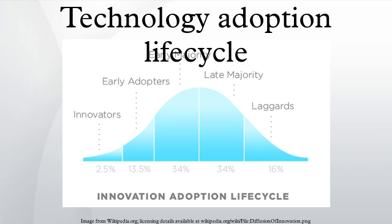The model has spawned a range of adaptations that extend the concept or apply it to specific domains of interest. In his book Crossing the Chasm, Geoffrey Moore proposes a variation of the original life cycle. He suggests that for discontinuous or disruptive innovations, there is a gap or chasm between the first two adopter groups and the early majority.